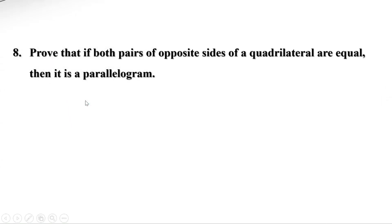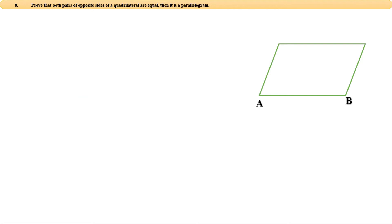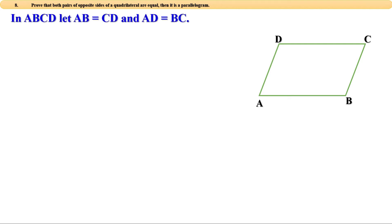Eighth problem: prove that if both pairs of opposite sides of a quadrilateral are equal, then it is a parallelogram. Let ABCD be a quadrilateral in which AB equals CD and AD equals BC. Join AC — the quadrilateral is now divided into two triangles.